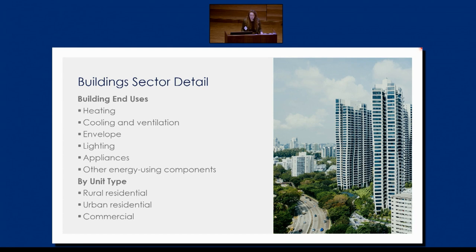Starting with the building sector — most of it is demand-focused. We look at everything from heating, envelope, lighting, and appliances, and we can break that down by building type: typically rural, urban, and commercial. The model is quite adaptable — for example, I was just working with a partner who wanted all residential lumped together, and we were able to do that. You can then impact all sorts of policies like electrifying heat, renovation rates, energy efficiency standards, or even improved labeling on appliances.